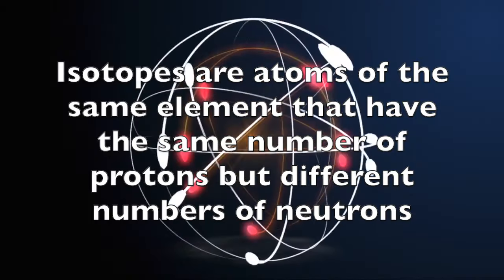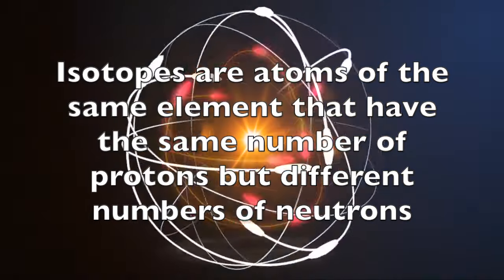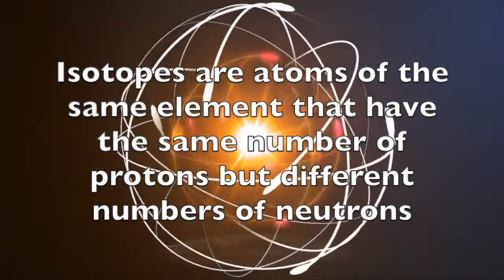In summary, isotopes are atoms of the same element that have the same number of protons, but different numbers of neutrons.